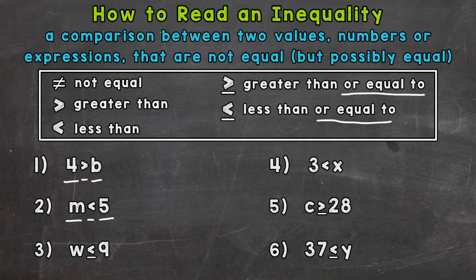Number three, we have W is less than or equal to. So when you have that little line under the symbol, that means or equal to. So W is less than or equal to nine. So again, we're just reading from left to right.